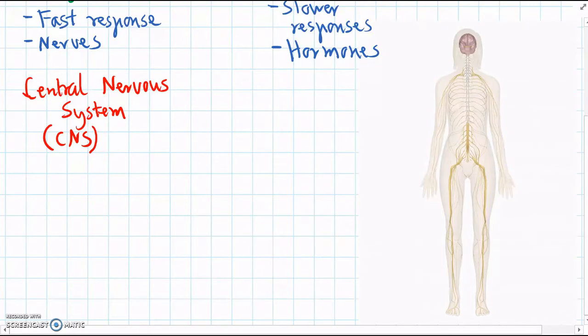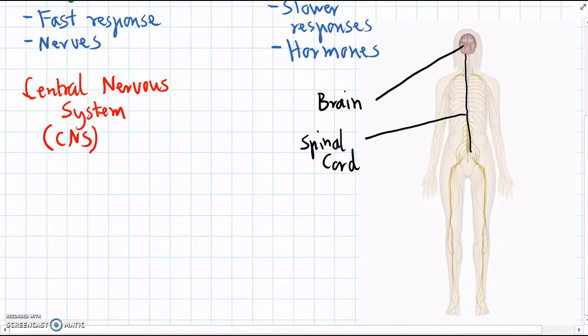So the central nervous system is made up of the brain and the spinal cord. And the spinal cord is actually made up of nerve cells all the way down that run in between our spine bones or vertebrae.